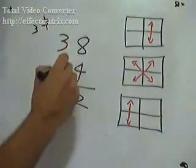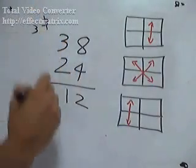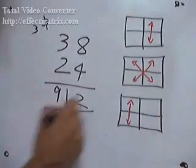And then we carry over 3. And then 6 is 3 times 2, plus 3 is 9, 912.